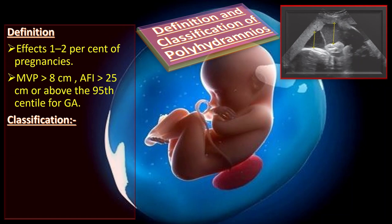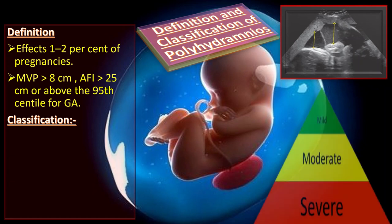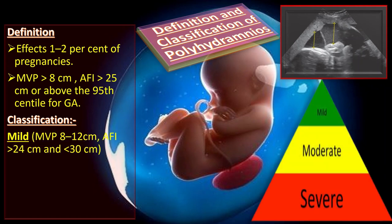Let us discuss the classification. In mild polyhydramnios, the maximum vertical pool is 8-12 cm and the AFI is more than 24 cm and less than 30 cm.